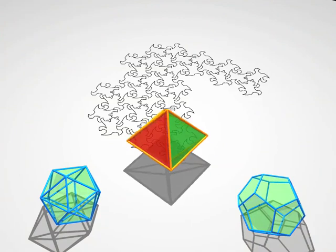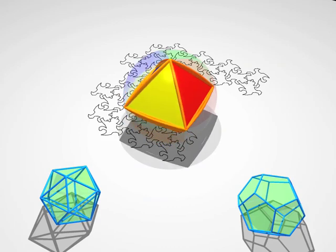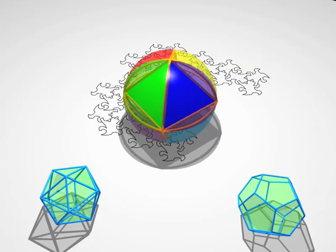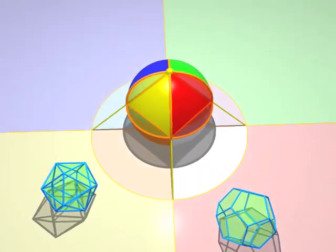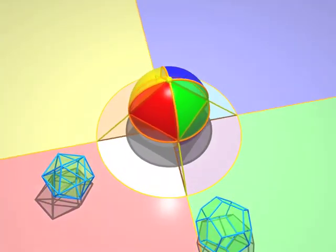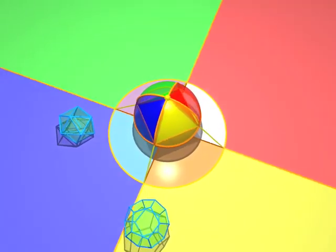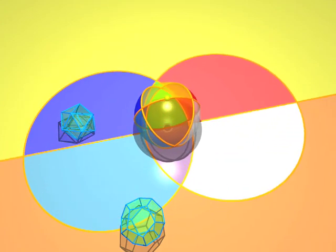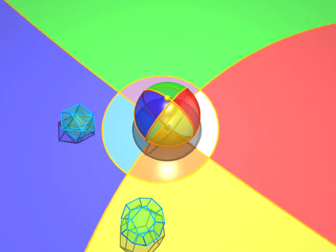And now, here comes an octahedron. You see the eight coloured faces. Look how the projections of the edges are arcs of circles.